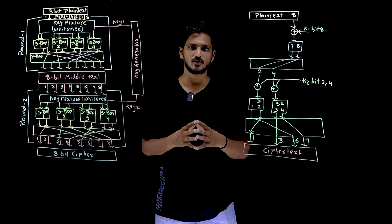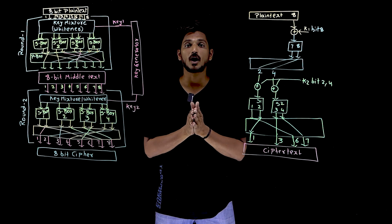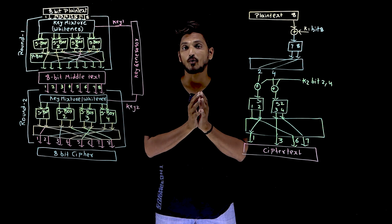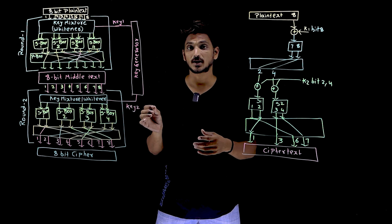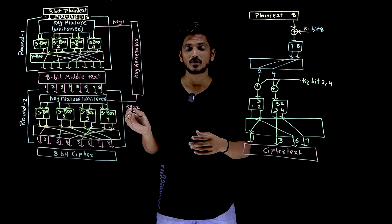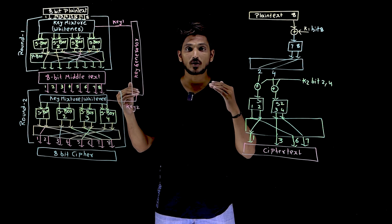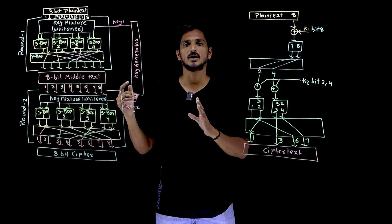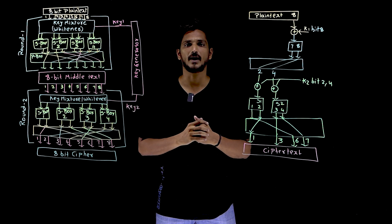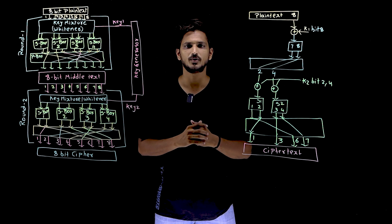Welcome to Learning Monkey, I am Raghu here. In this class, we will discuss about how confusion and diffusion is provided using the product cipher. In our last classes, we clearly discussed about the design of the product cipher and what confusion and diffusion means. Please watch those classes and come back here. The link for the playlist is provided in the description below.